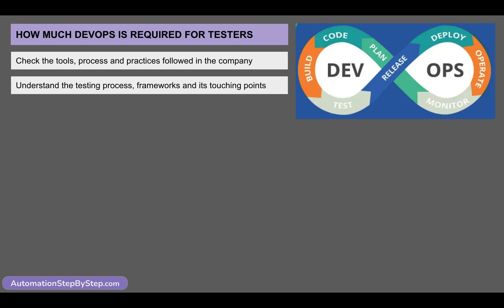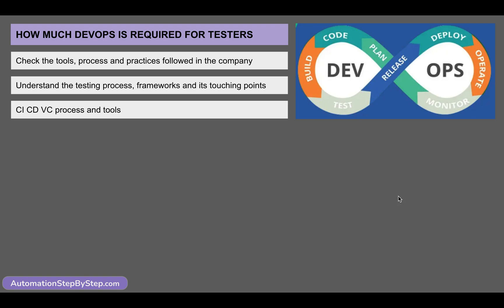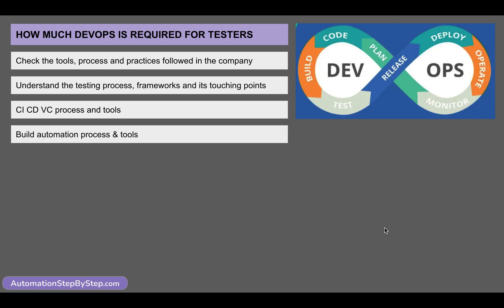There will definitely be a CI/CD process and tools involved in a DevOps process. There will also be a version control process and tools involved. You have to understand what the CI/CD process is, what the tools are, and what the version control tools and process are. Now, you may not have to go very, very deep if it is being taken care of by other teams, but you should understand these tools and processes in your project or company.